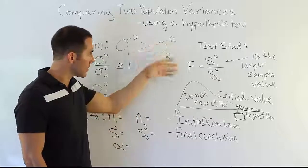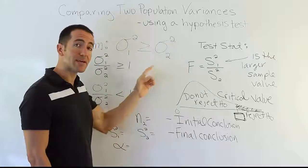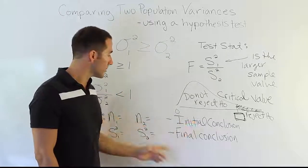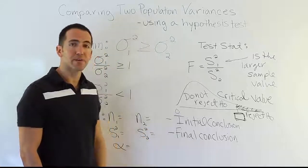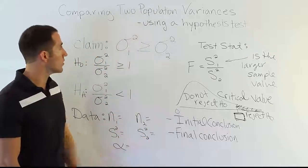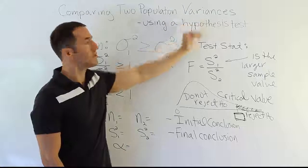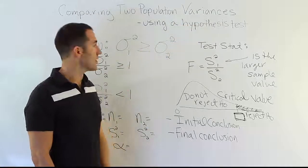So our critical value comes from a different place. But essentially, it's still the same idea: test stat, critical value, make a comparison, form the initial conclusion, and then word your final conclusion. And once you've done that, you'll conduct a successful test for population variances to see if they're the same or not.